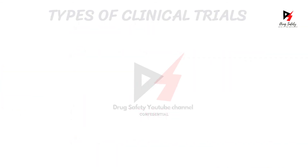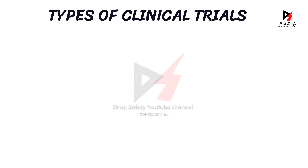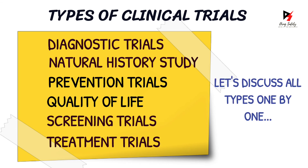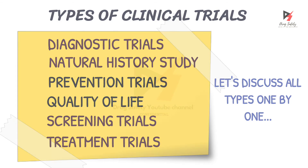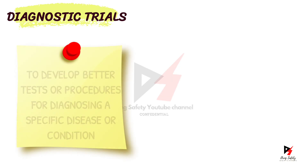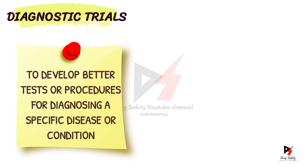Clinical trials are also further divided into five types based on the desired end result of the trials. The five types of clinical trials are listed on the screen. The first type is diagnostic trials. Researchers conduct diagnostic trials to develop better laboratory tests or surgical procedures which help in diagnosing a specific disease or condition.